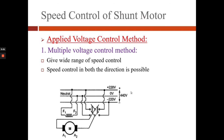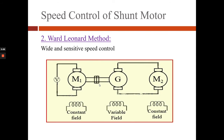Now we will see the applied voltage control method. In this method for a DC shunt motor, the field winding is connected to a constant DC voltage, but the armature is supplied with different voltages with the help of suitable switchgear as shown. This gives a wide range of speed control and speed control in both directions is possible.